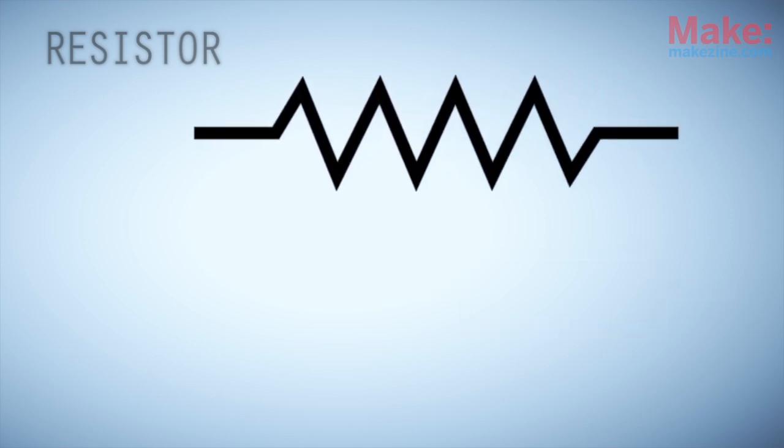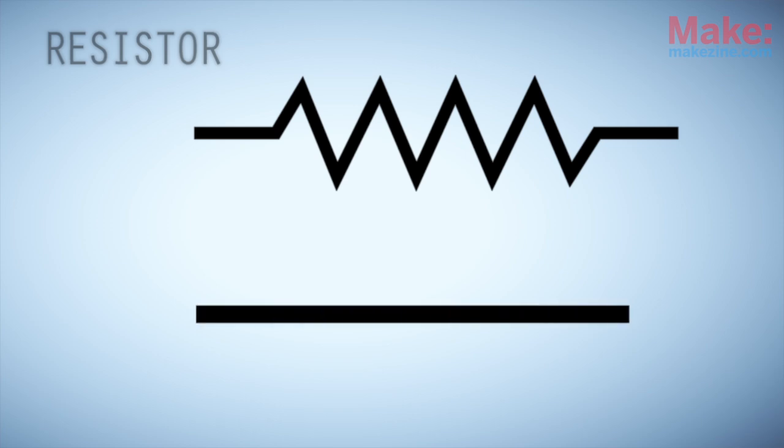That zigzagging shape actually hints at what a resistor does. Instead of allowing electrical current to flow through smoothly, like it does through a wire, a resistor restricts the flow of current, forcing it to follow a limited path of conductive material.